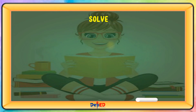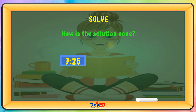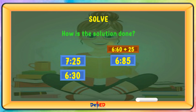Third is to solve. How is the solution done? 7:25 p.m. Since we cannot subtract 30 from 25, we regroup: 7:25 becomes 6:85. Then 6:85 minus 6:30 equals 55 minutes.